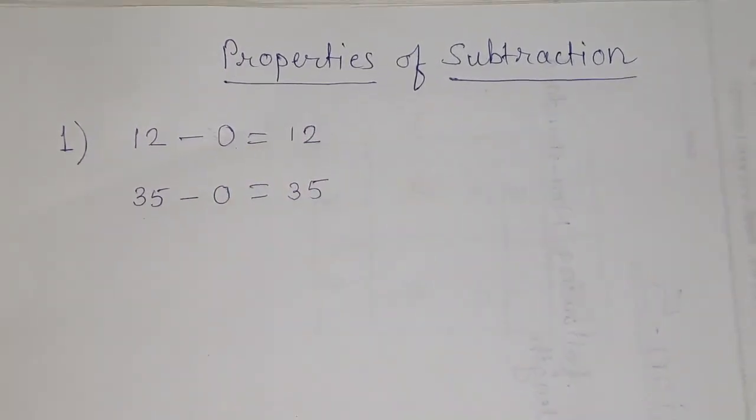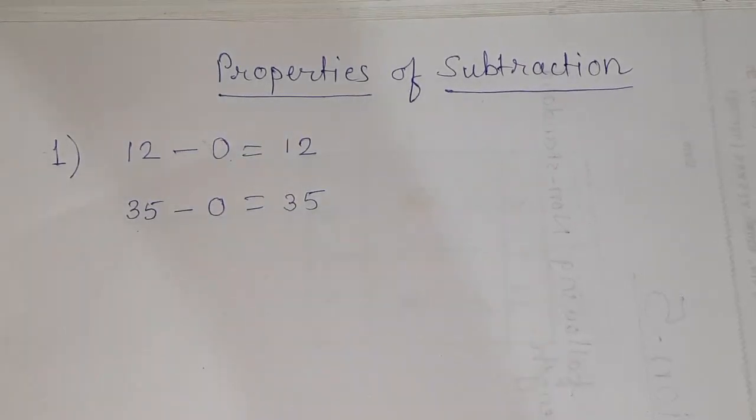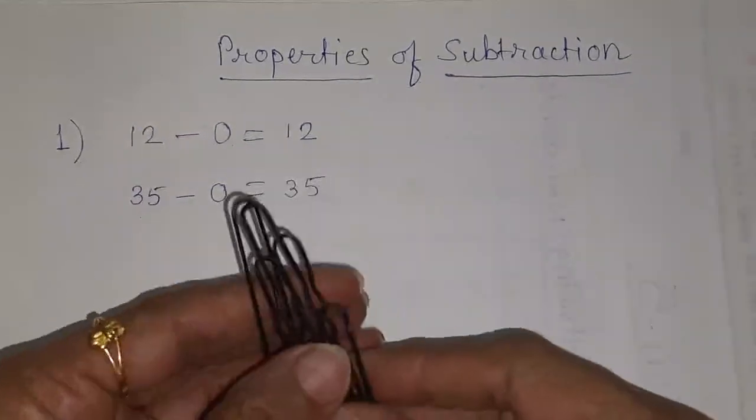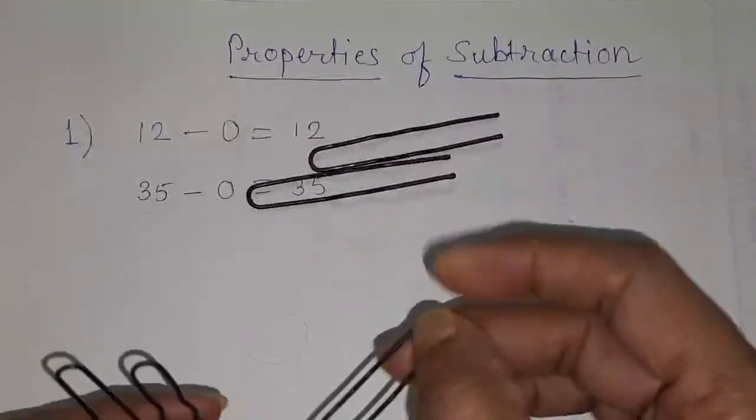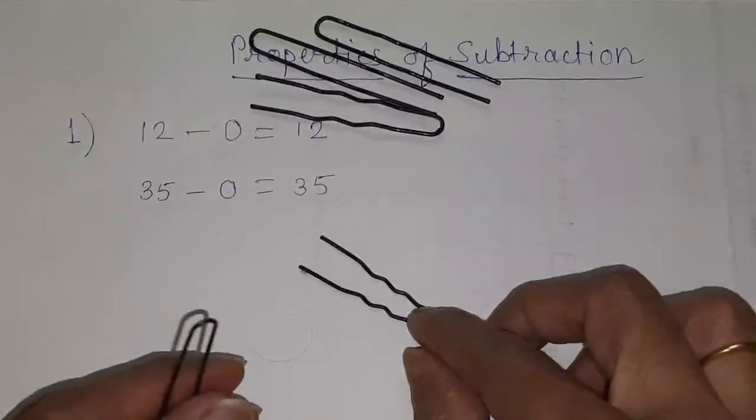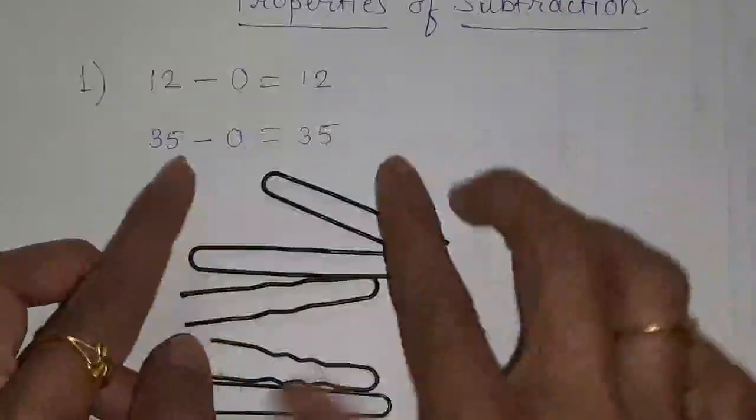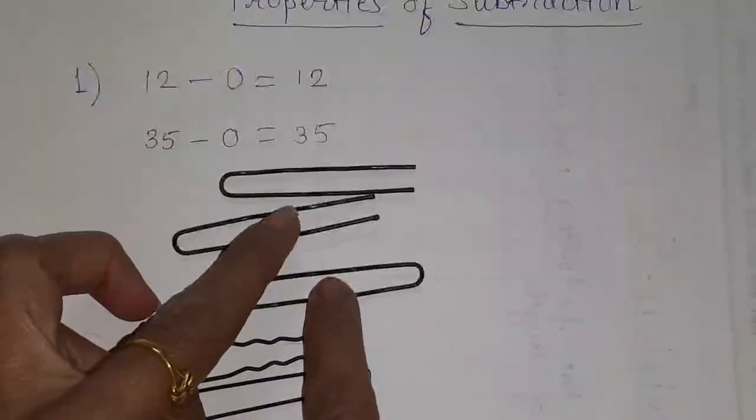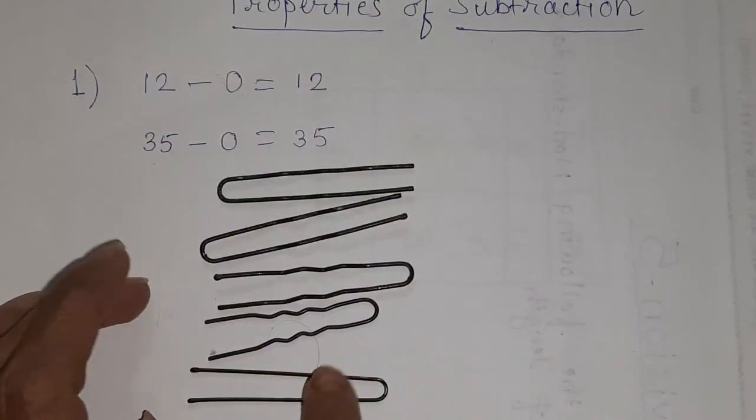So, we will do with some objects. We will see that. Students, here I am having some pins. Let us count it. 1, 2, 3, 4 and 5. So, from these 5 pins, I have to remove 0. Remove 0 means, you should not remove anything. Remove 0 means, it will remain as it is.